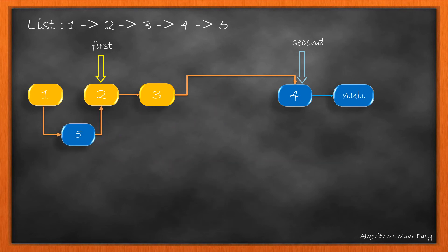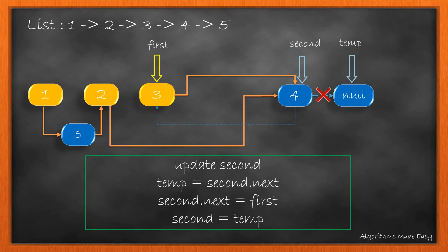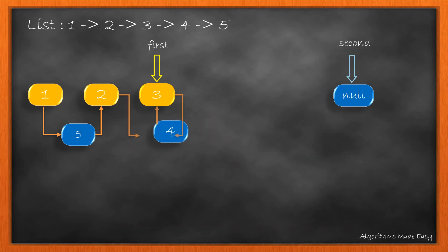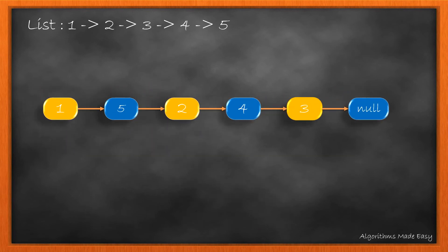We perform the same to weave node 4 between 2 and 3. Now, we need to again update the next of first to point to the second node. As second becomes null, we end the operations. This becomes our final list as required.